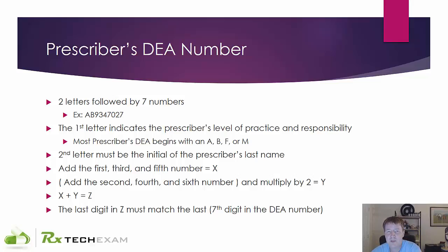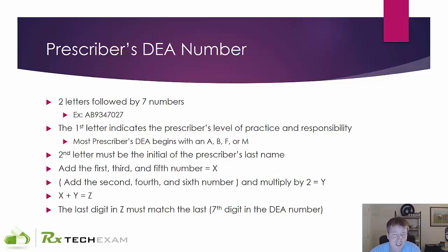The second letter has to be the first initial of the prescriber's last name. For example, if you receive a prescription and the DEA number for Dr. Carlton has anything other than C as the second letter, you know there's a problem. So that's the first check — is the second letter the first initial of the doctor's last name?